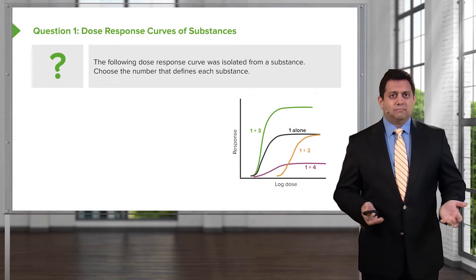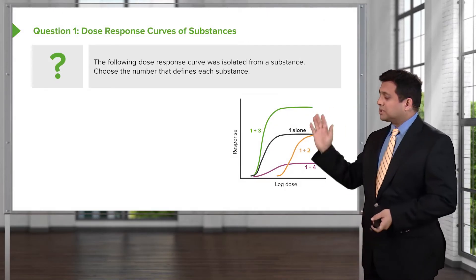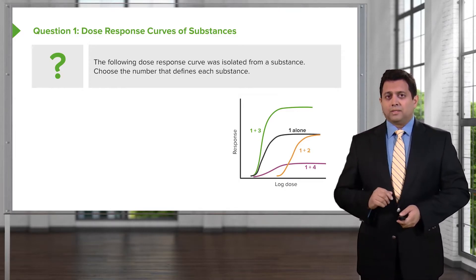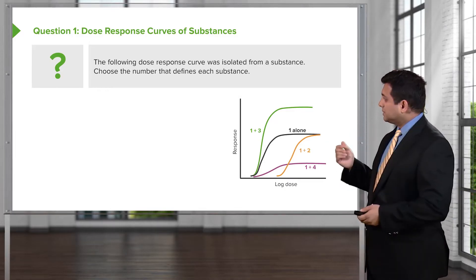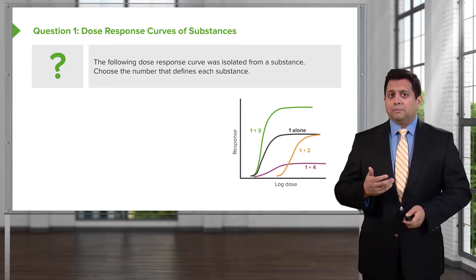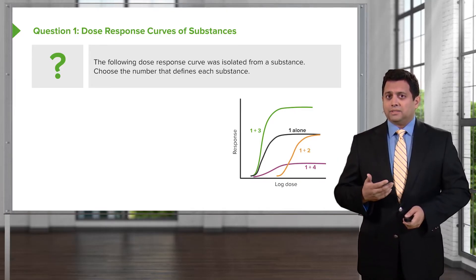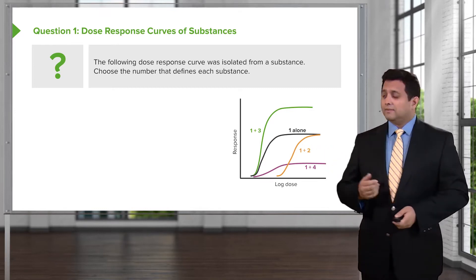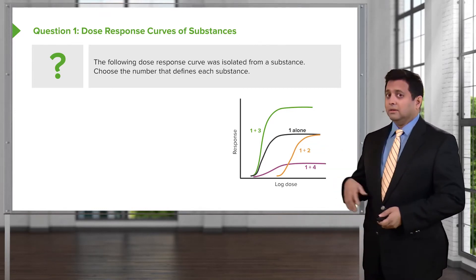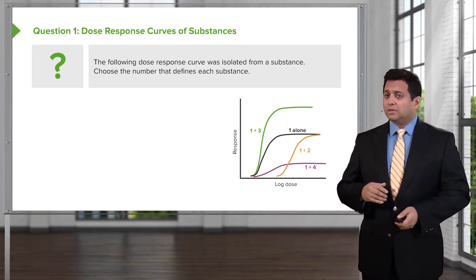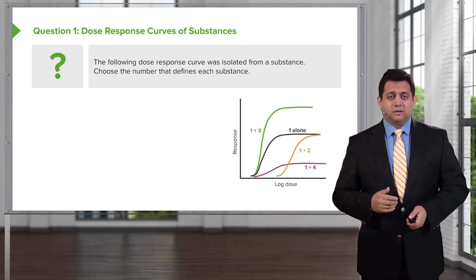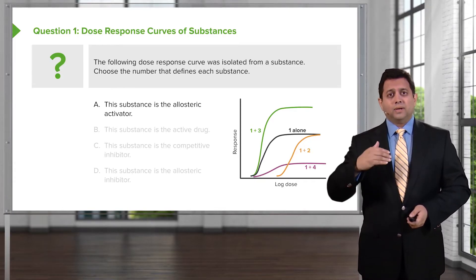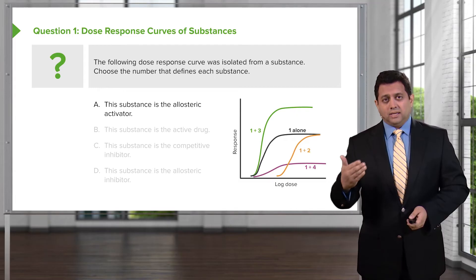Let's start with a question — a great example of what you'll see on your board exam. The following dose response curve was isolated from a substance. Choose the number that defines each substance. You have a green curve that's 1 and 3, a black curve that's 1 alone, a yellow curve that's 1 and 2, and a plum colored curve that's 1 and 4.